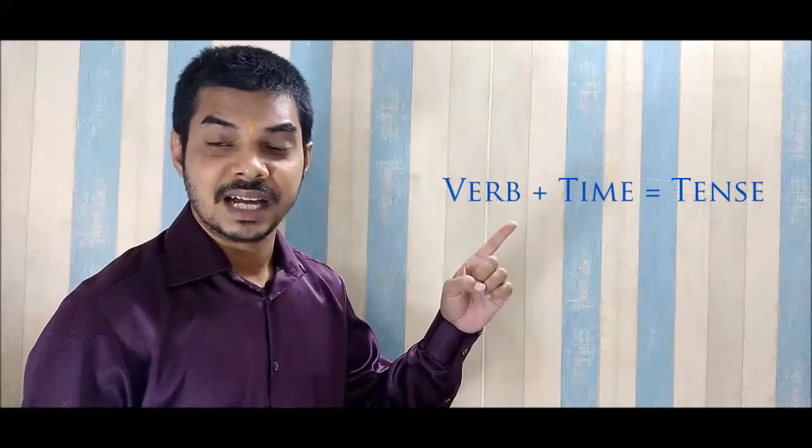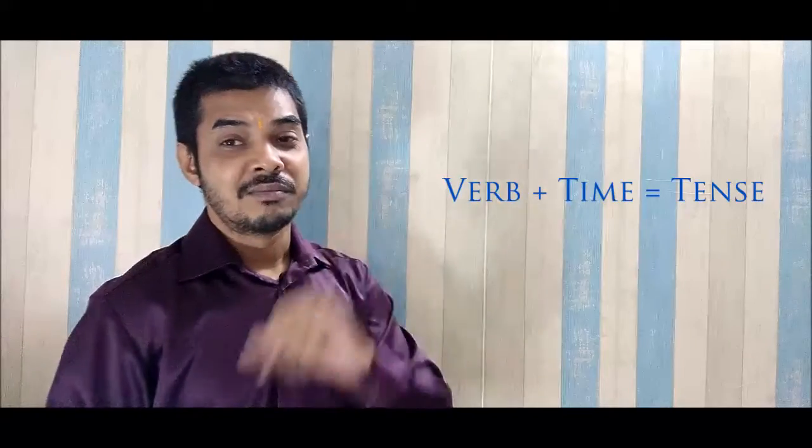The time of the action gets imbibed into the verb as the form of tense. So whenever you produce a sentence, you must remember that there's an action or a state — whatever it may be, it must be presented through the tense and the verb. When we conjugate verb and time, we get the tense. So finally: verb plus time equals tense.